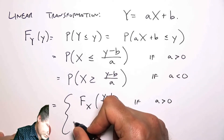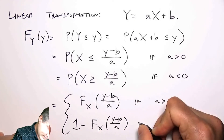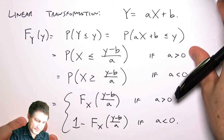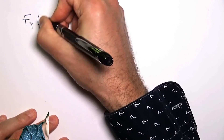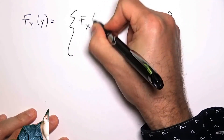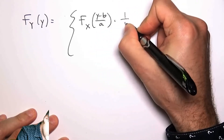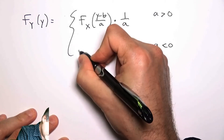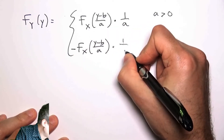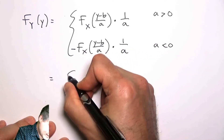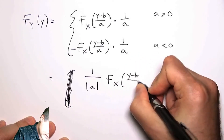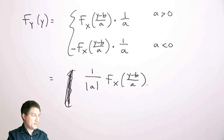If a < 0, then the CDF of Y is 1 minus the CDF of X at (y - b)/a. The PDF is the derivative of the CDF. Working through both cases and combining them, the PDF of Y is (1/|a|) times the PDF of X evaluated at (y - b)/a — the absolute value of a takes care of both cases at once.